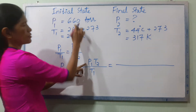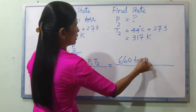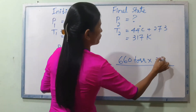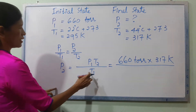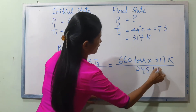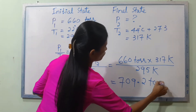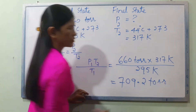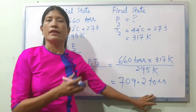P1 is 660 torr. T2 is 317 Kelvin. T1 is 295 Kelvin. The control value is 709.2 torr, and T1 is 40.